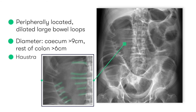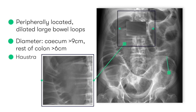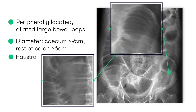These are different from the valvulae conniventes that we see in small bowel, which are fully circumferential folds of mucosa seen as lines that span the full width of the lumen of the small bowel on abdominal x-ray. With haustrae, these lines only partially span the width of the lumen.